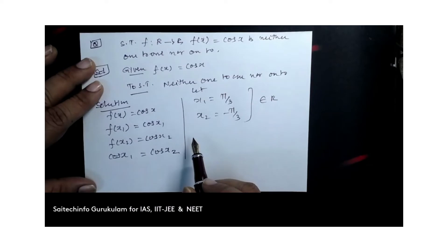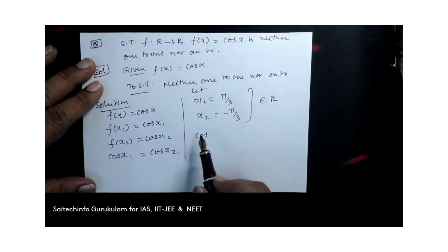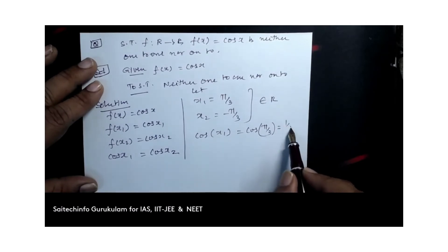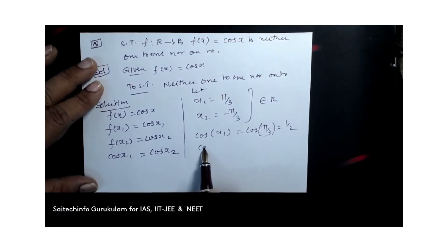So they belong to real numbers. Cos of x1 equals cos x2. Let us substitute these values. Therefore, cos of x1 equals cos π by 3, which is nothing but 1 by 2.